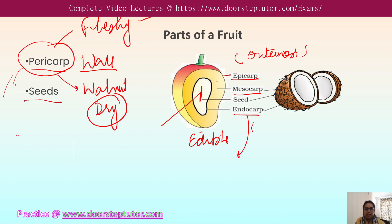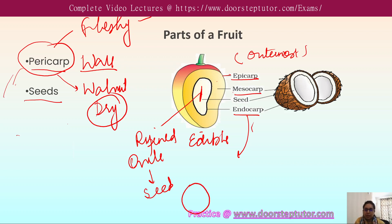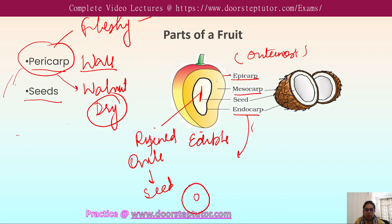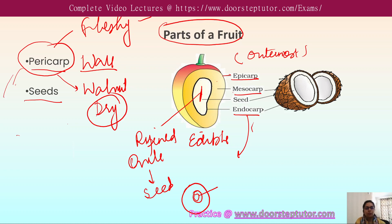So the pericarp is differentiated into three layers: epicarp, mesocarp, and endocarp. The seed is the second part of the fruit — it is the ripened, fertilized ovule that has converted into the seed. The seed is an embryonic plant enclosed in a protective covering.